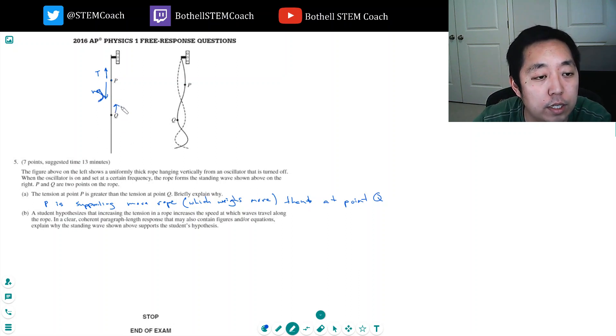And same up here—this is tension on Q, Mg. But this mass is just the weight of this part of the rope, which is less than this one. Hence, because they're not accelerating, the upward force has to equal the downward force. So the tension equals Mg. And because this Mg is smaller, this tension has to be smaller.